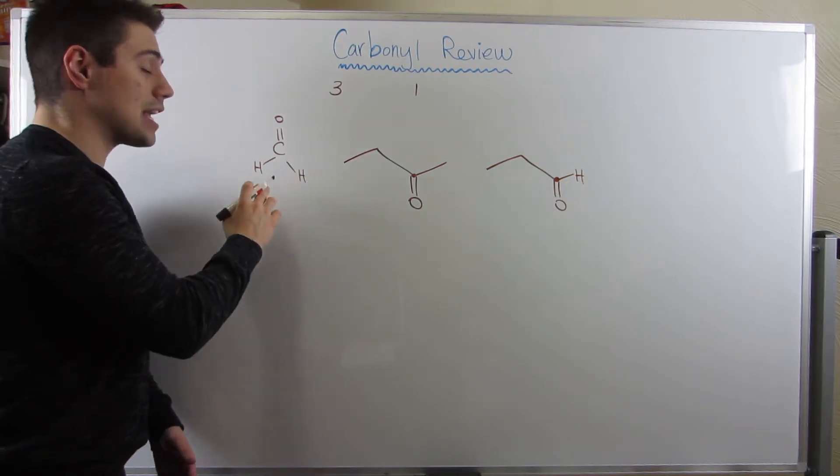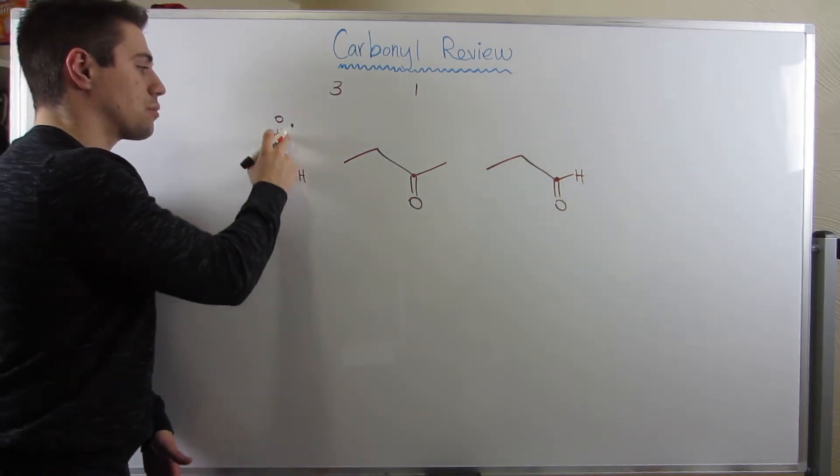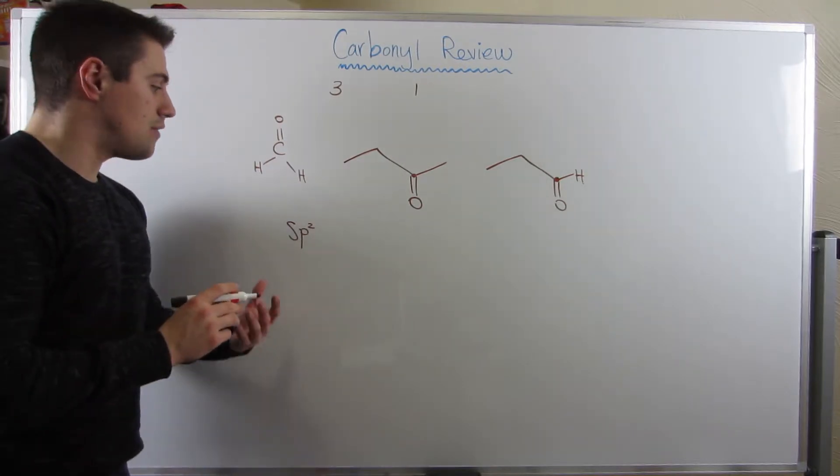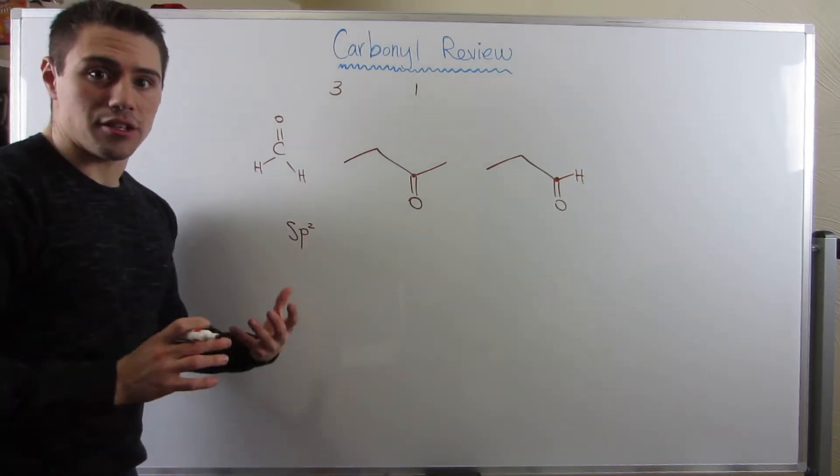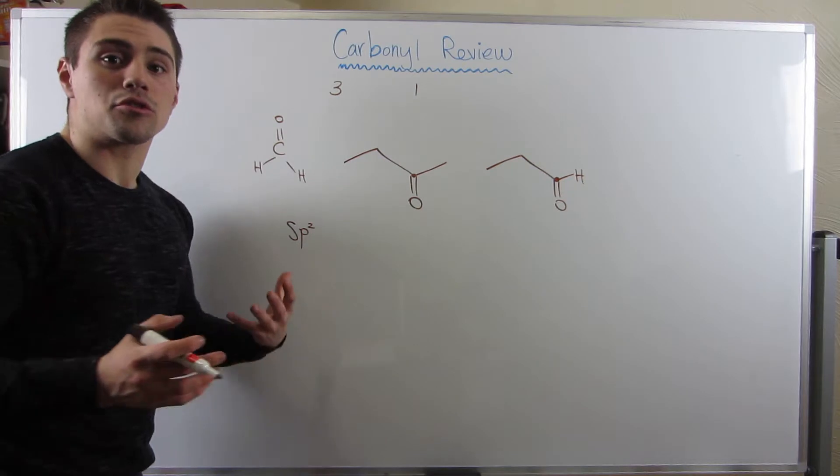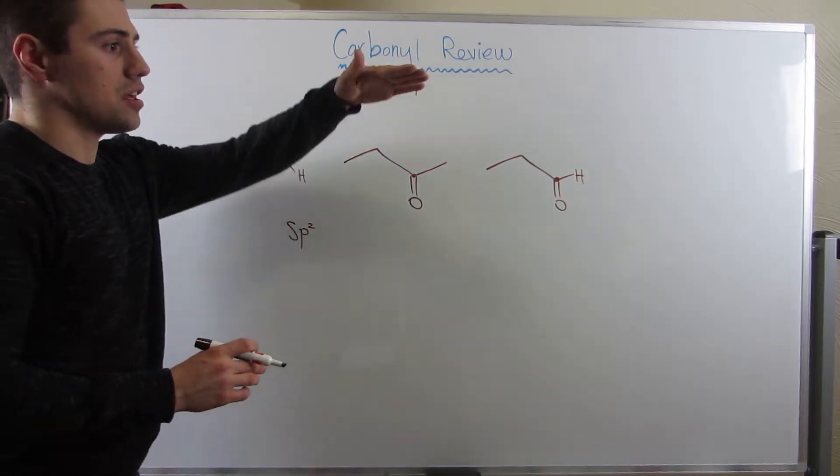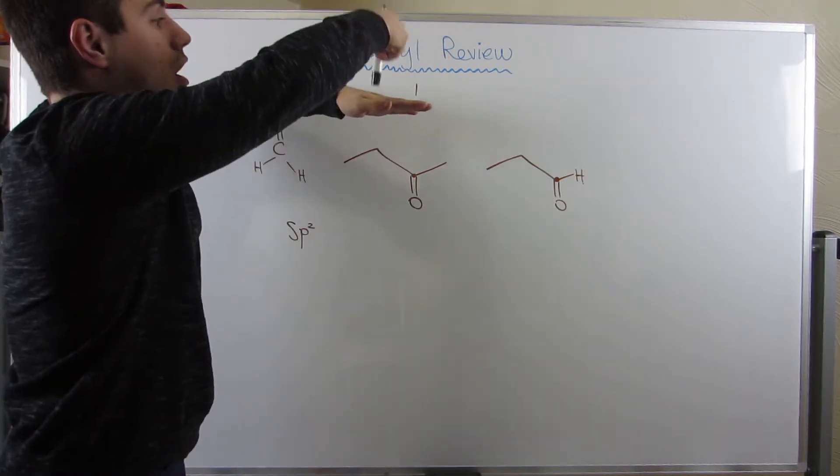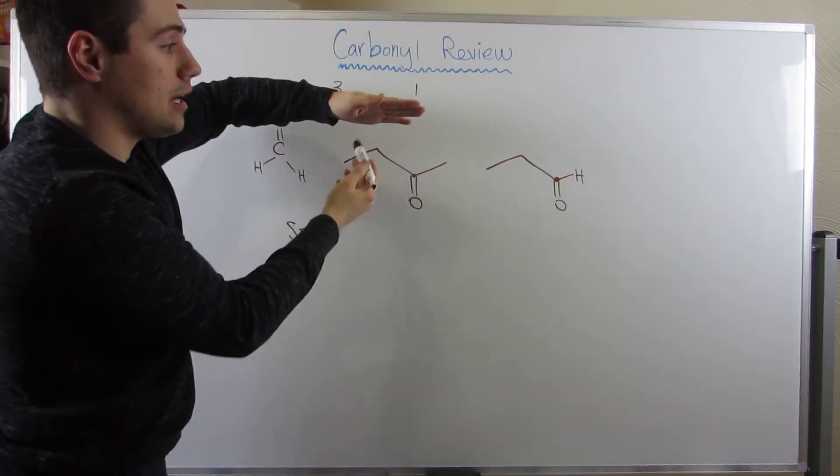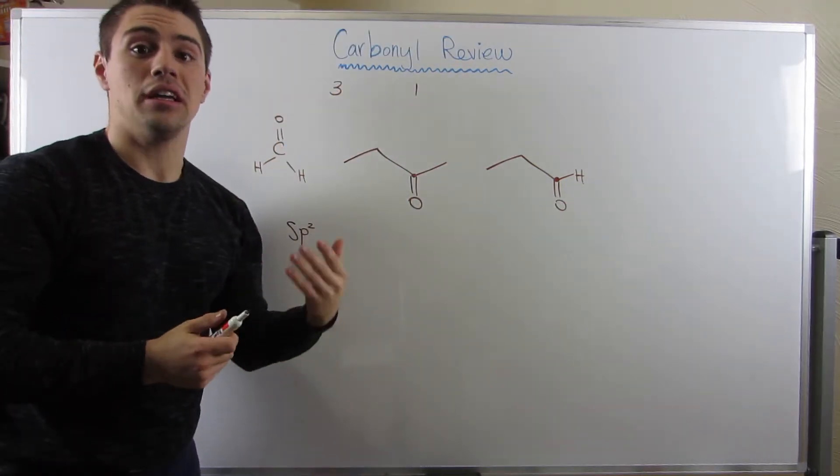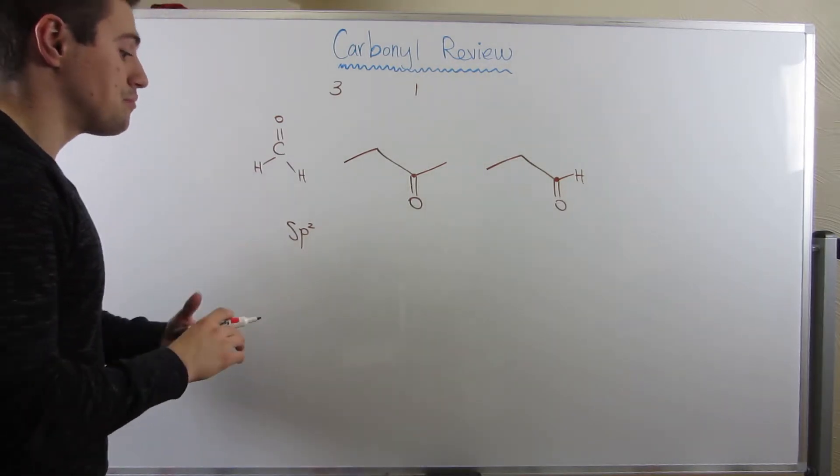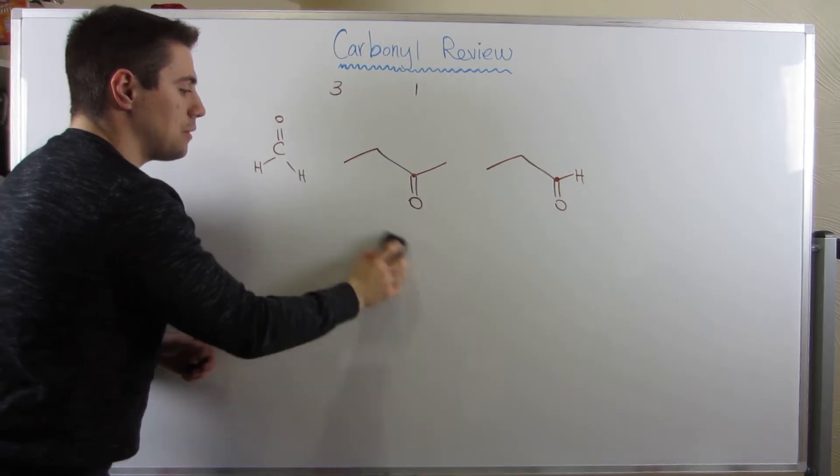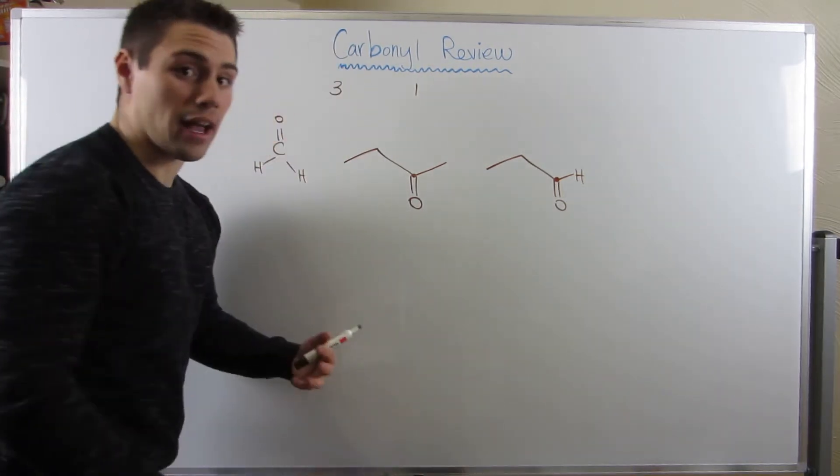Clearly, remember, carbonyls are sp2 hybrids, right, because we have one, two, three bonding areas. We need three orbitals to make those hybrid orbitals. They have, as a consequence of that geometry, they're flat, right? They're trigonal planar, so that means they're completely flat like this. There's no difference between attacking on top or on the bottom. Every attack of a carbonyl yields a racemic mixture. However, even though they all share the same geometry, that doesn't mean that we can't have added steric effects, right?